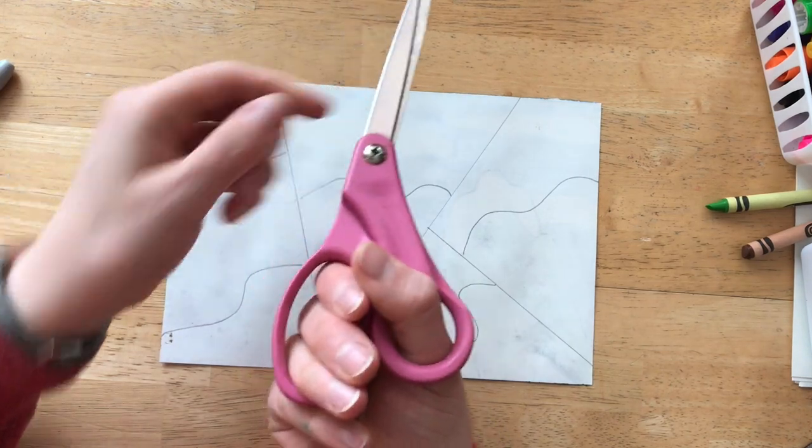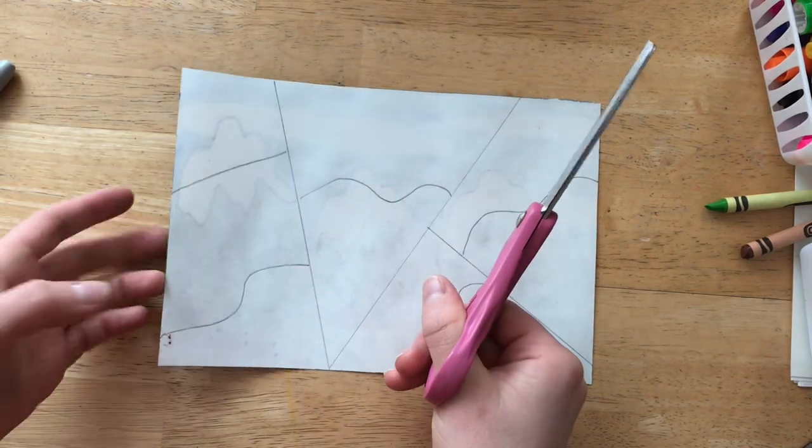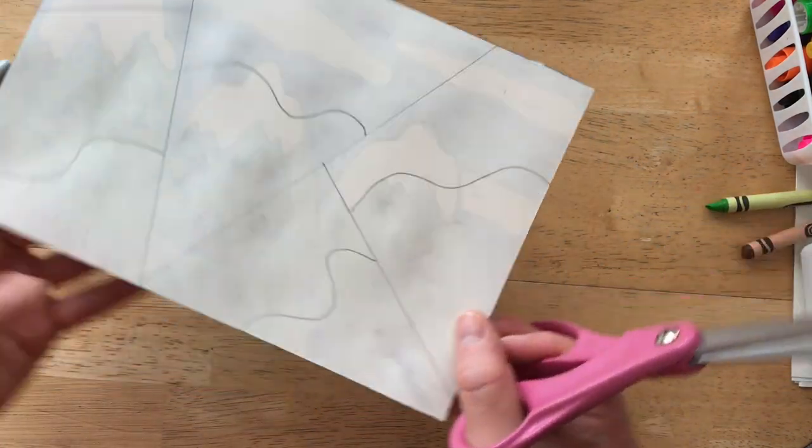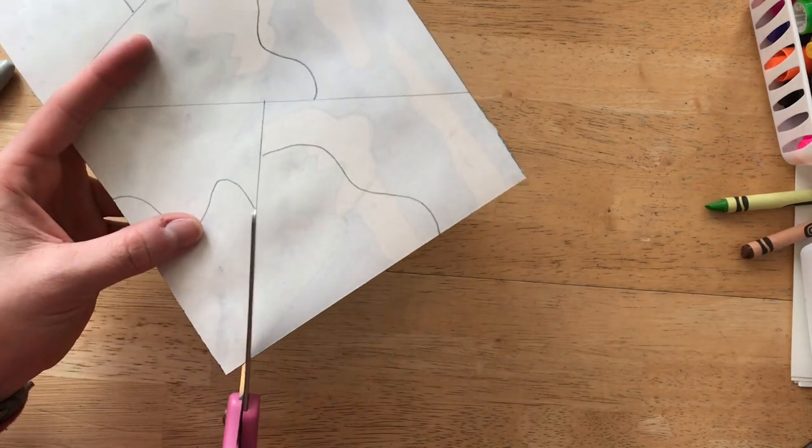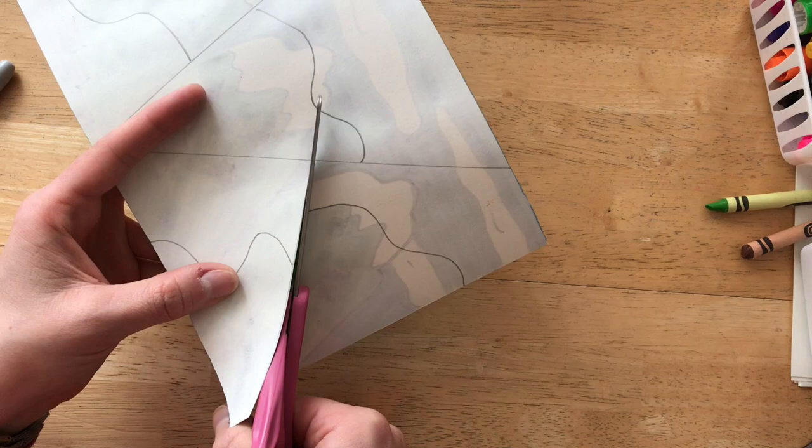Now I am going to use my scissors to cut my pieces. Make sure you are holding your scissors the right way and make sure you are staying on your lines. I'm going to use my helper hand to hold my artwork and my scissors are facing away from me.